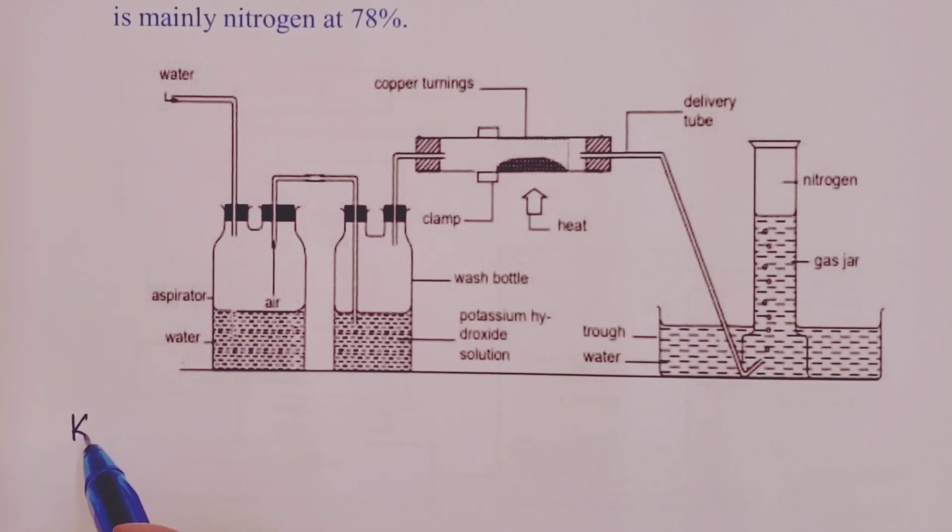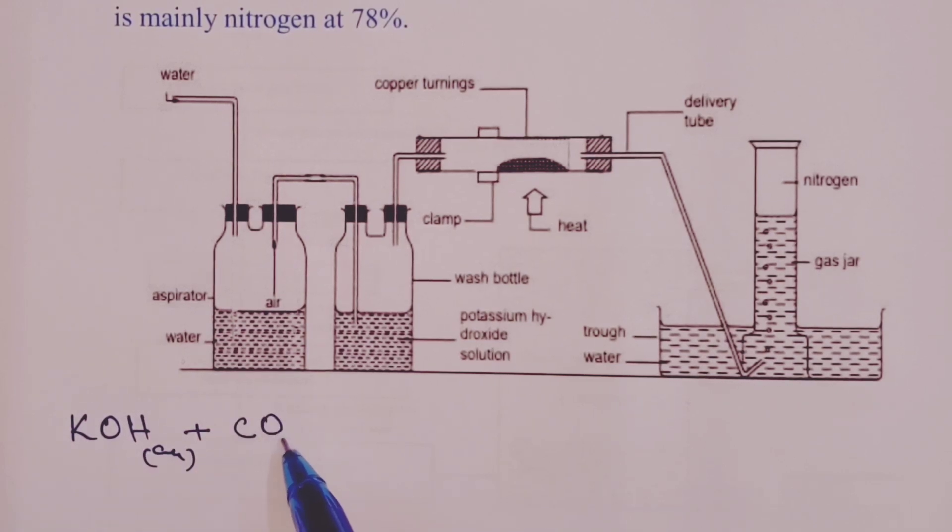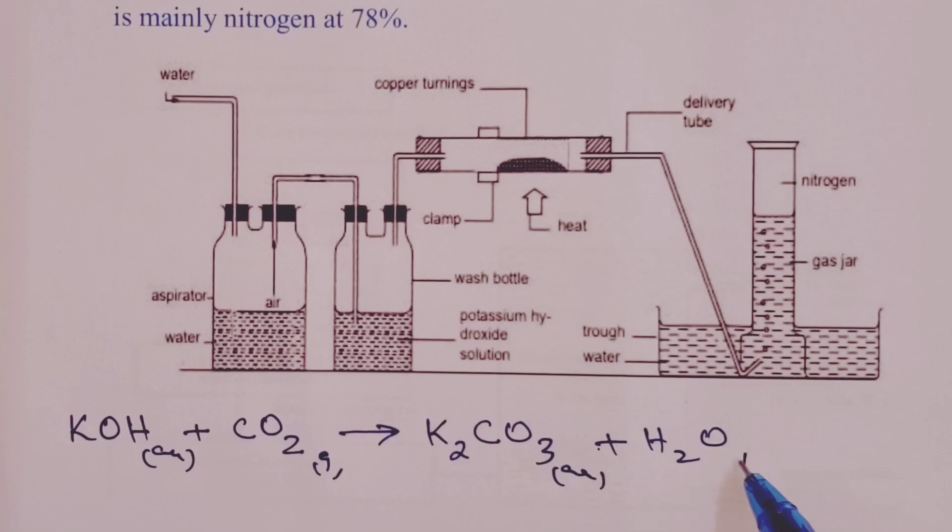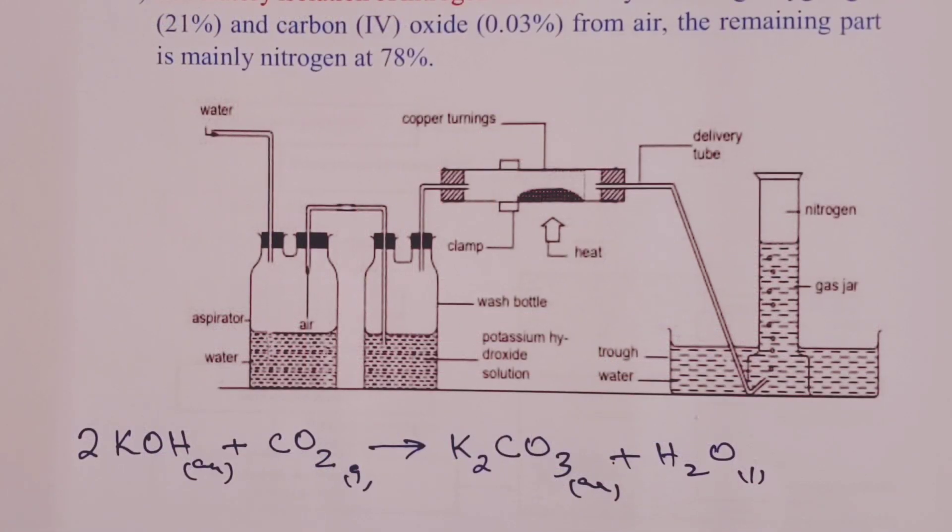Of course, the equation for the reaction would be potassium hydroxide would react with carbon (IV) oxide. And we shall form potassium carbonate and some water. Of course, this happens when we bubble our carbon (IV) oxide just for a short time.